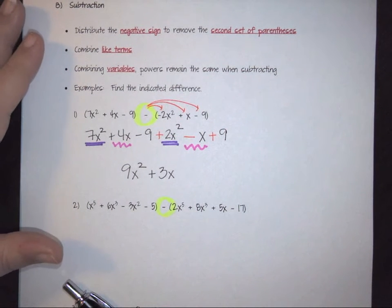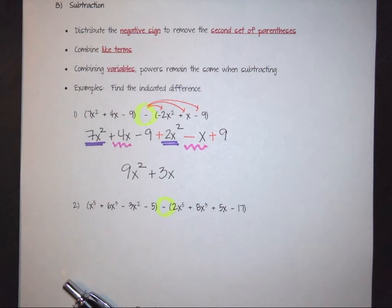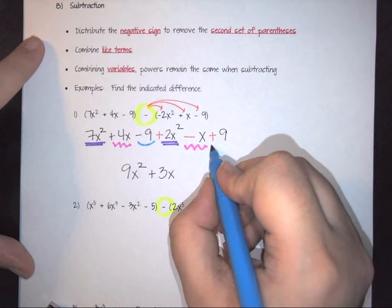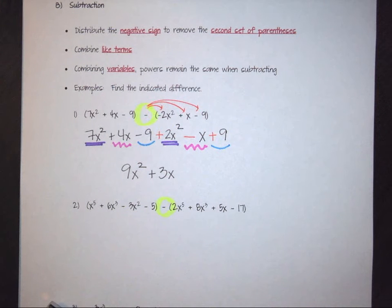And then the last thing that I have to combine together is I have this negative 9 and this positive 9. So negative 9 plus 9 gives me a 0.